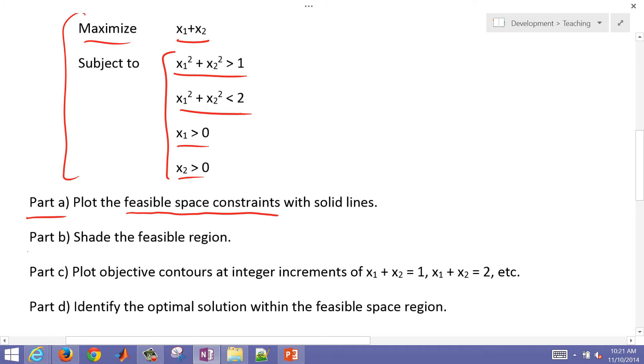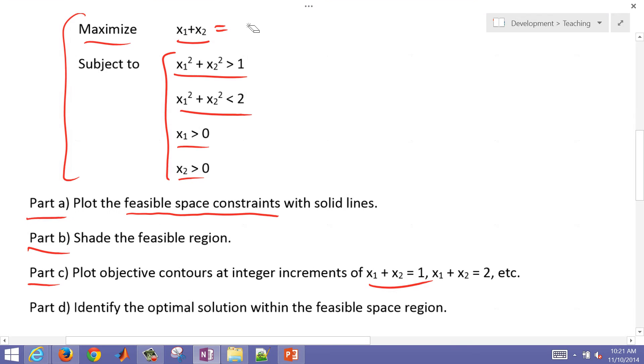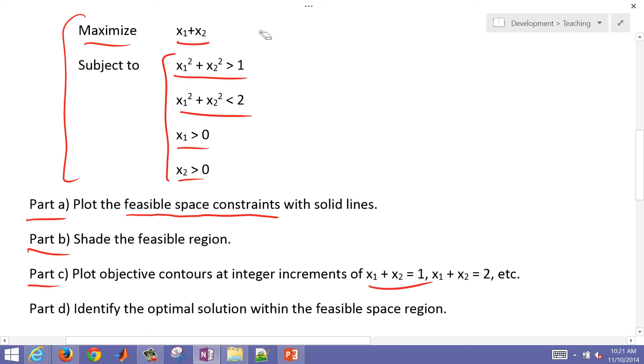We want to shade that region so we can pick any point among all the potential solutions within that feasible region. And then we're going to also plot the objective contours. We're going to select x1 plus x2 and set that equal to 1, for example, and then set it equal to 2 and to 3 and upward, and be able to see if we have any values of x1 and x2 that give us the highest objective function.